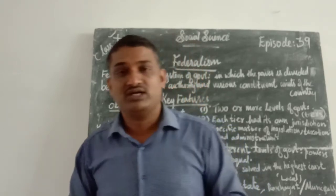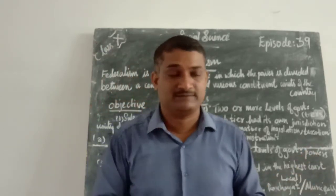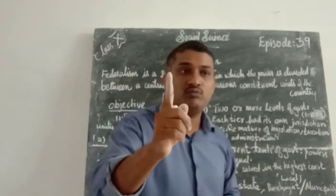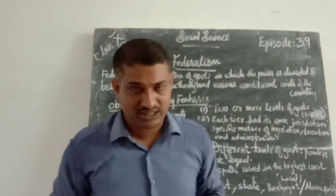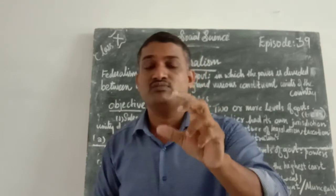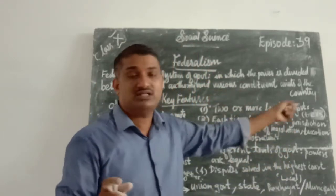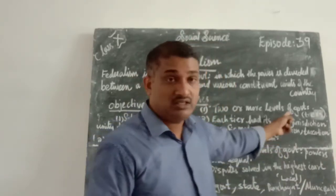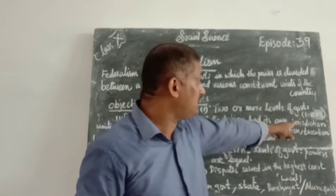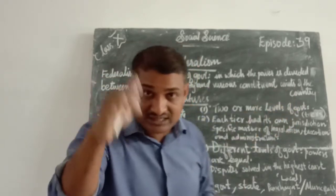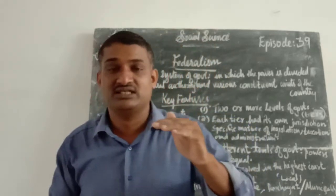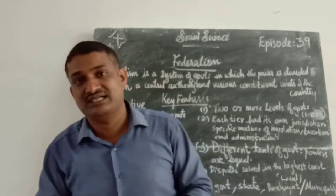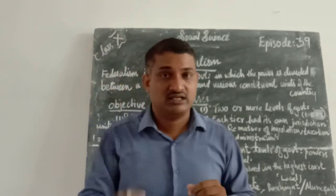What are the key features of federalism? Examination may ask what are the key features of federalism. First one: there are two or more levels of government. In a federal system, two or more levels of government are there. These levels of government we can call as TIER — T-I-E-R — meaning levels: first level, second level, third level. So three tiers or three levels are there.